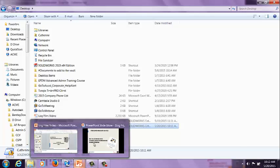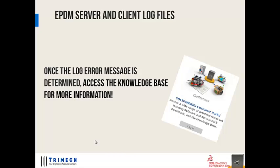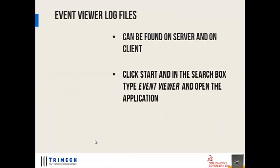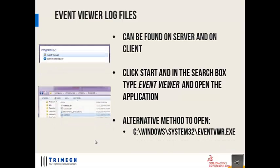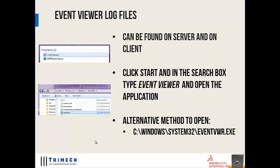That's the Enterprise PDM server and client log files — how to access them and the different options available. Let's switch over and take a look at some event viewer log files. These can be found on the server and on the client. They are built into the Microsoft Windows operating system. To find the event viewer, you can click on the Start button, type "event viewer" in the search box, and open the application. Or you can navigate to C:\Windows\System32 and double-click on the eventvwr.exe application.